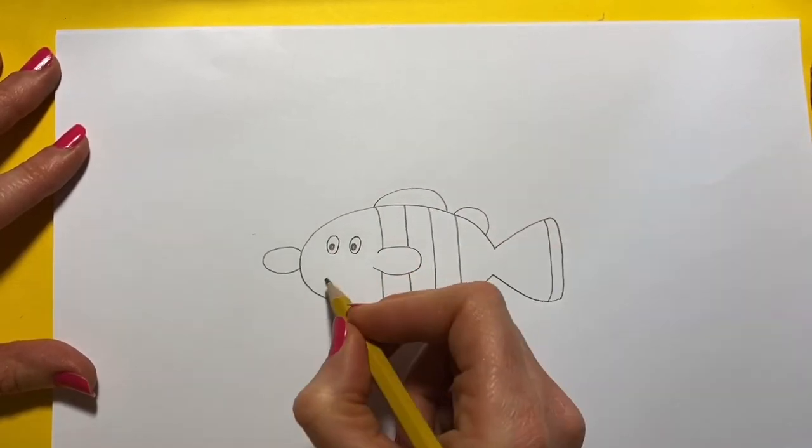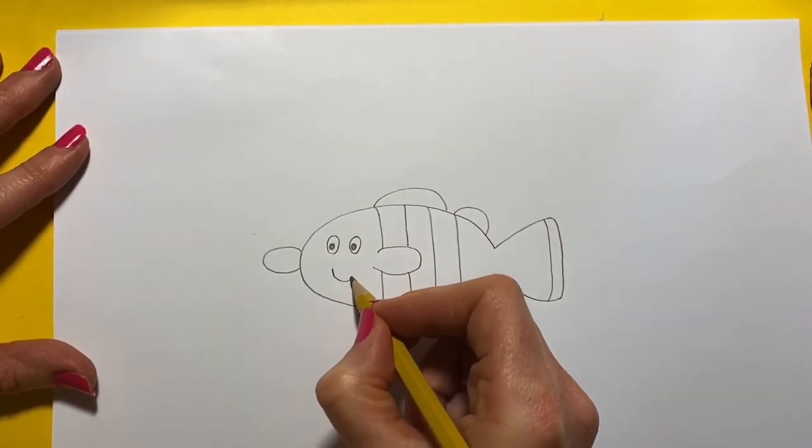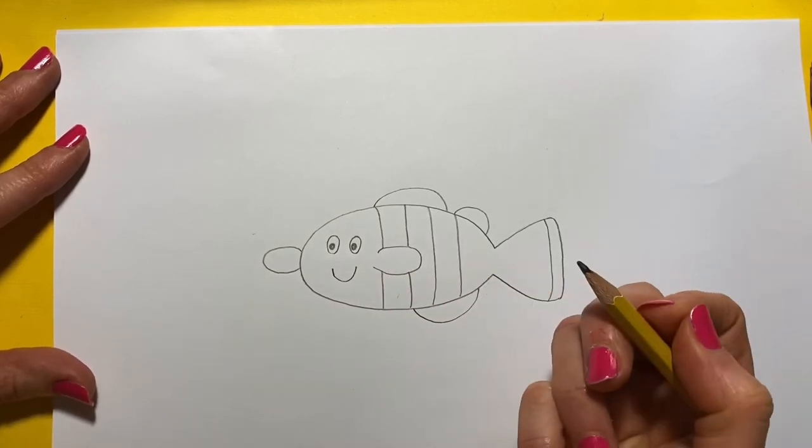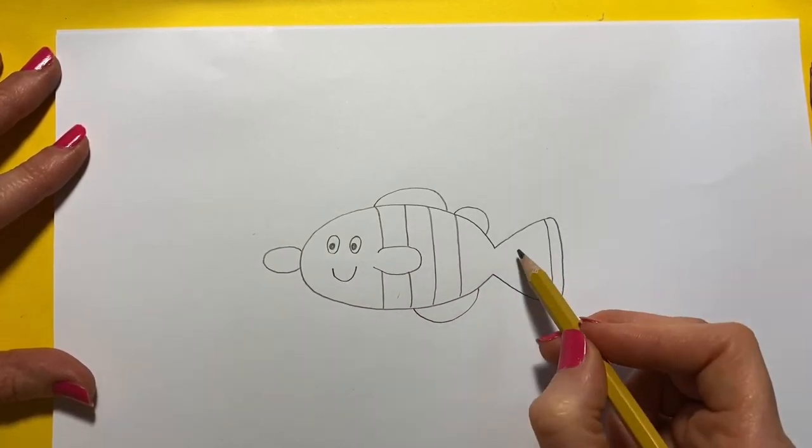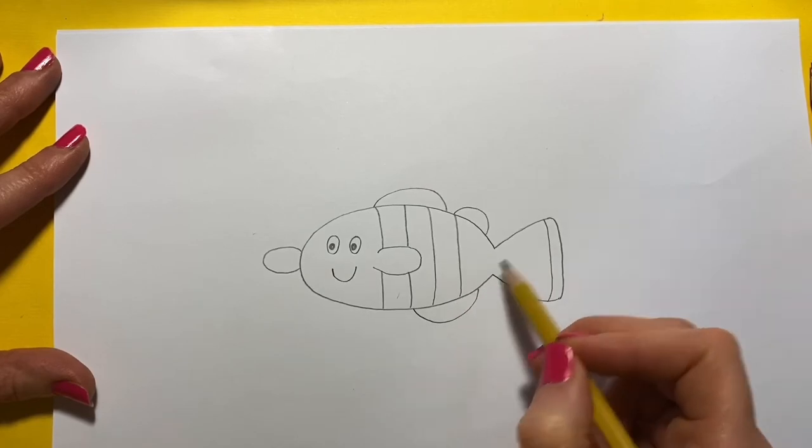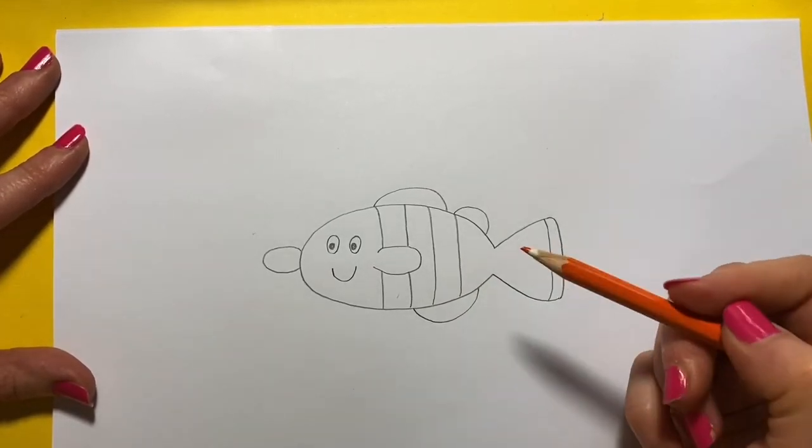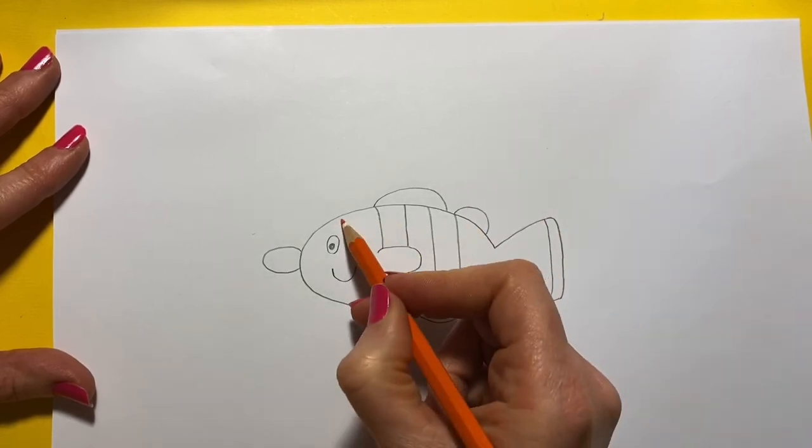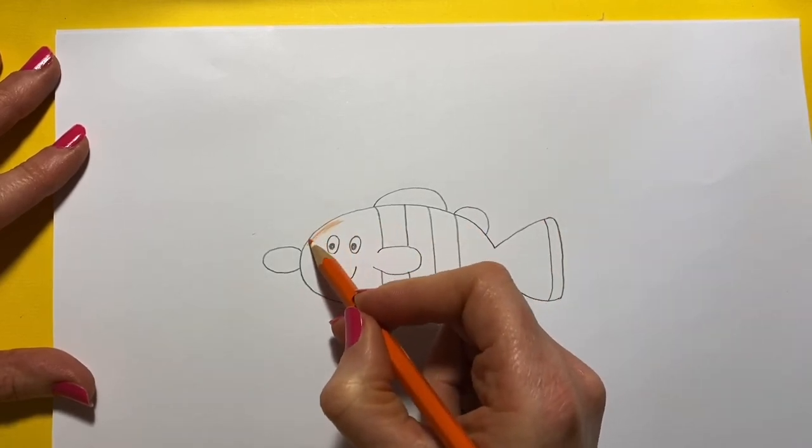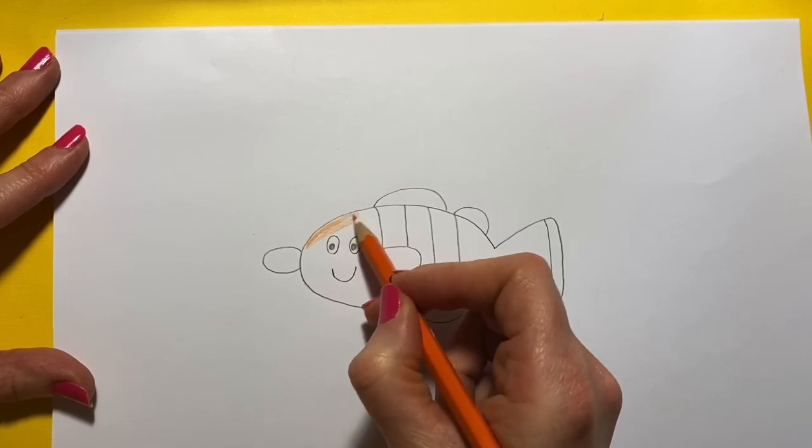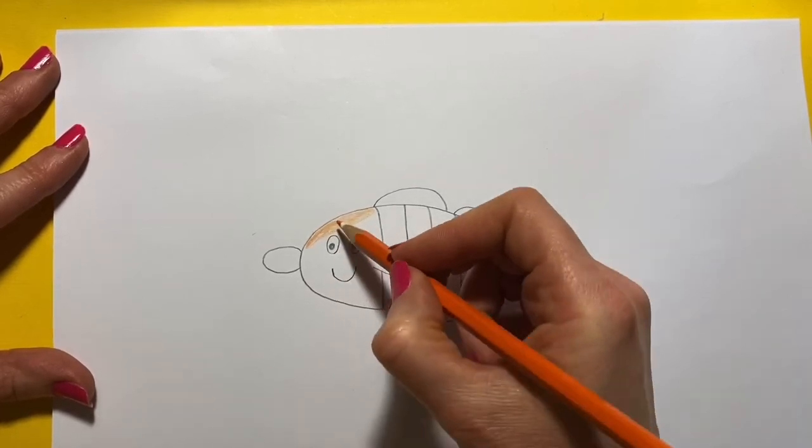Like that, and then a smiley face. Now I've got some detail to add to the fins, but I'm going to wait till I've colored in to do that. So let's pick up our orange pencil and color in our fish, our little Nemo clownfish.